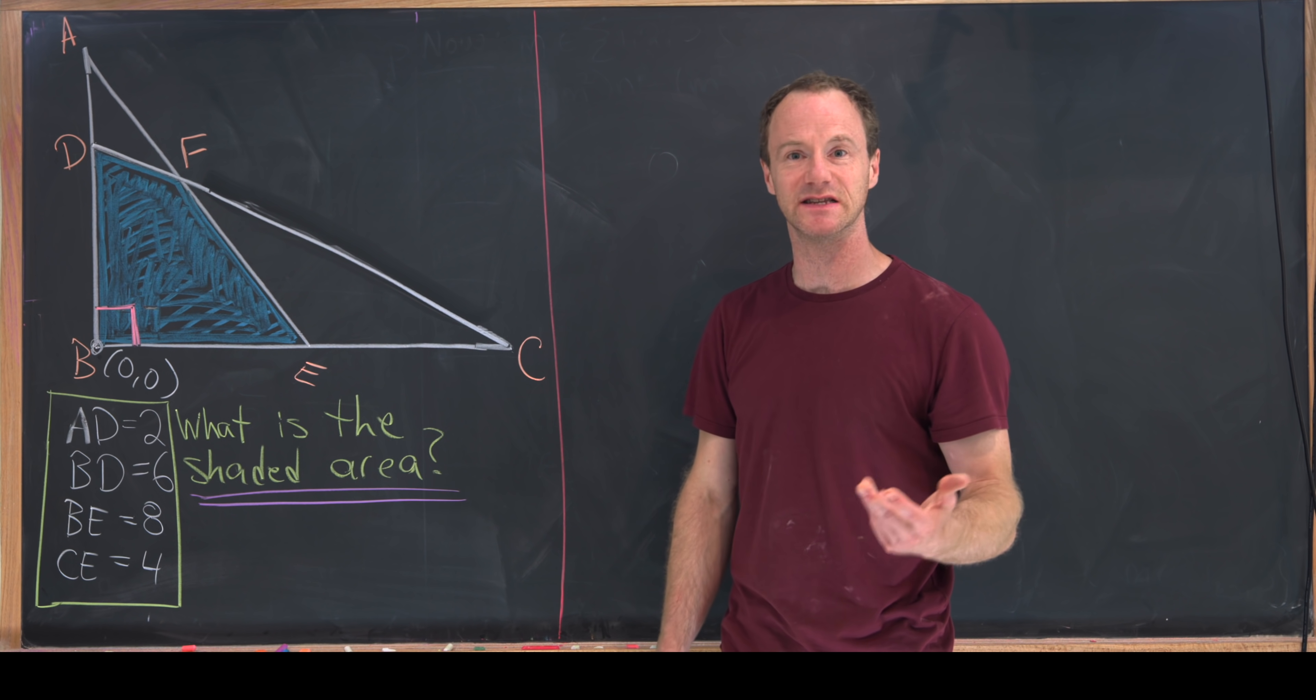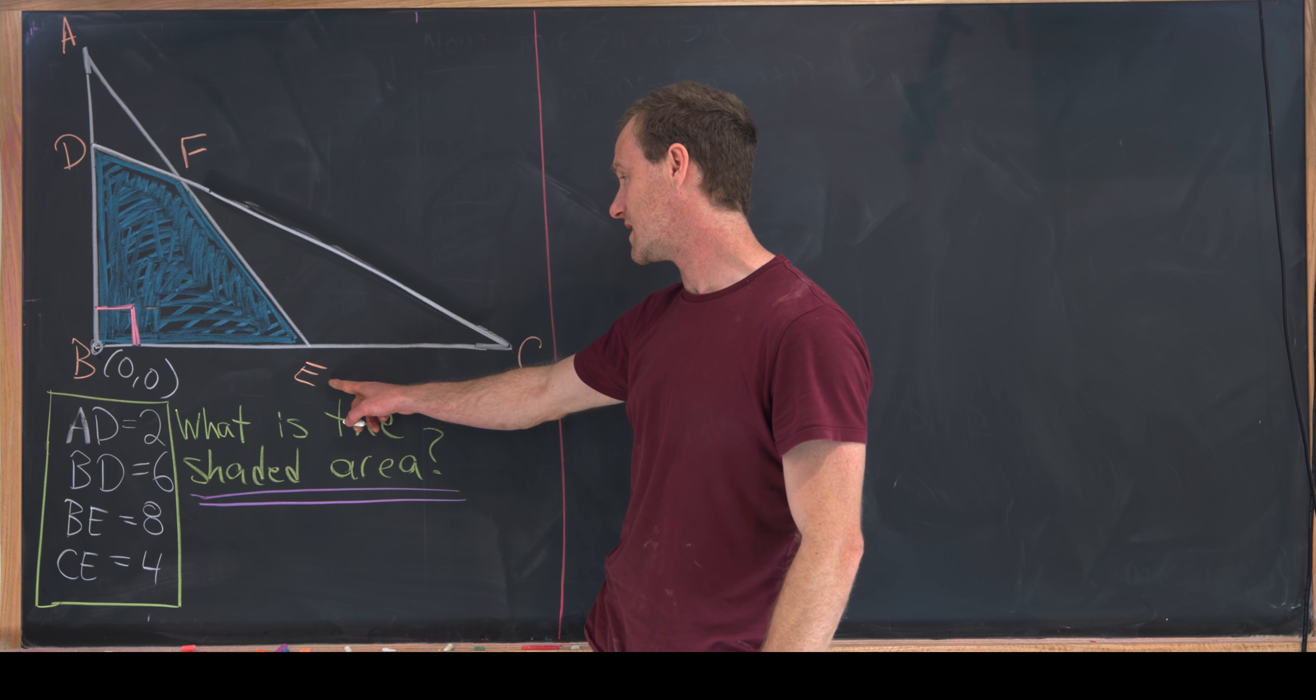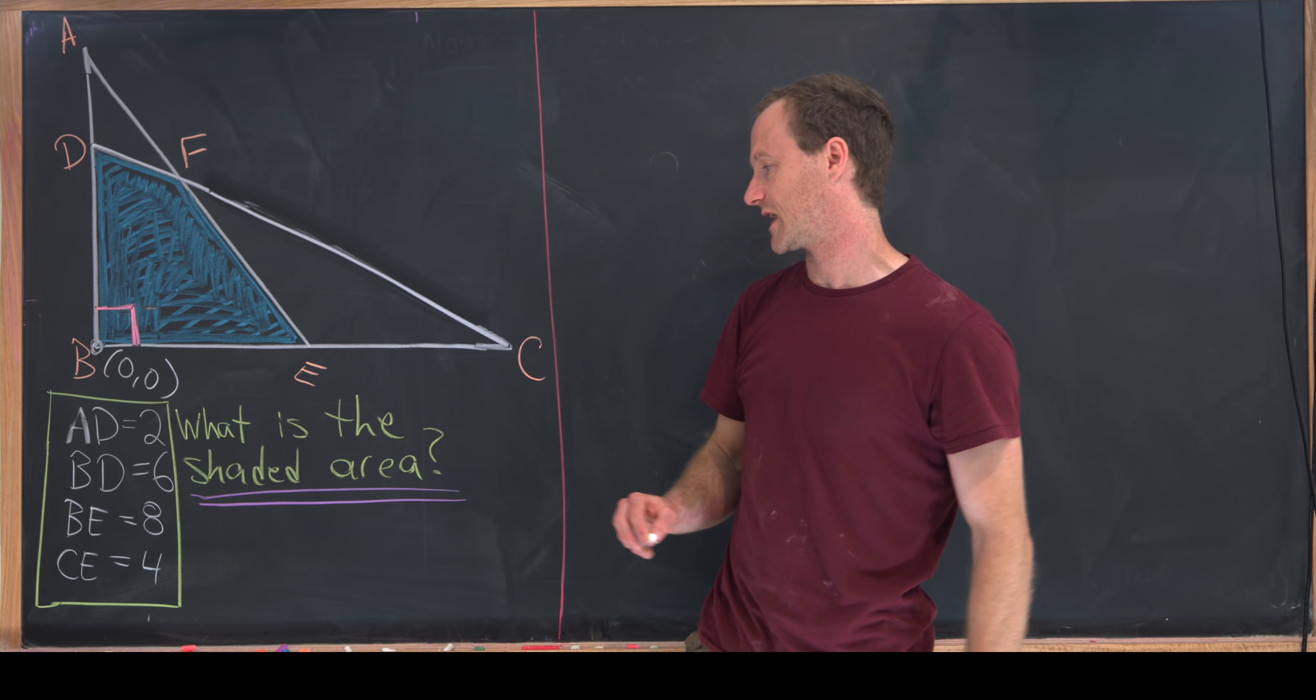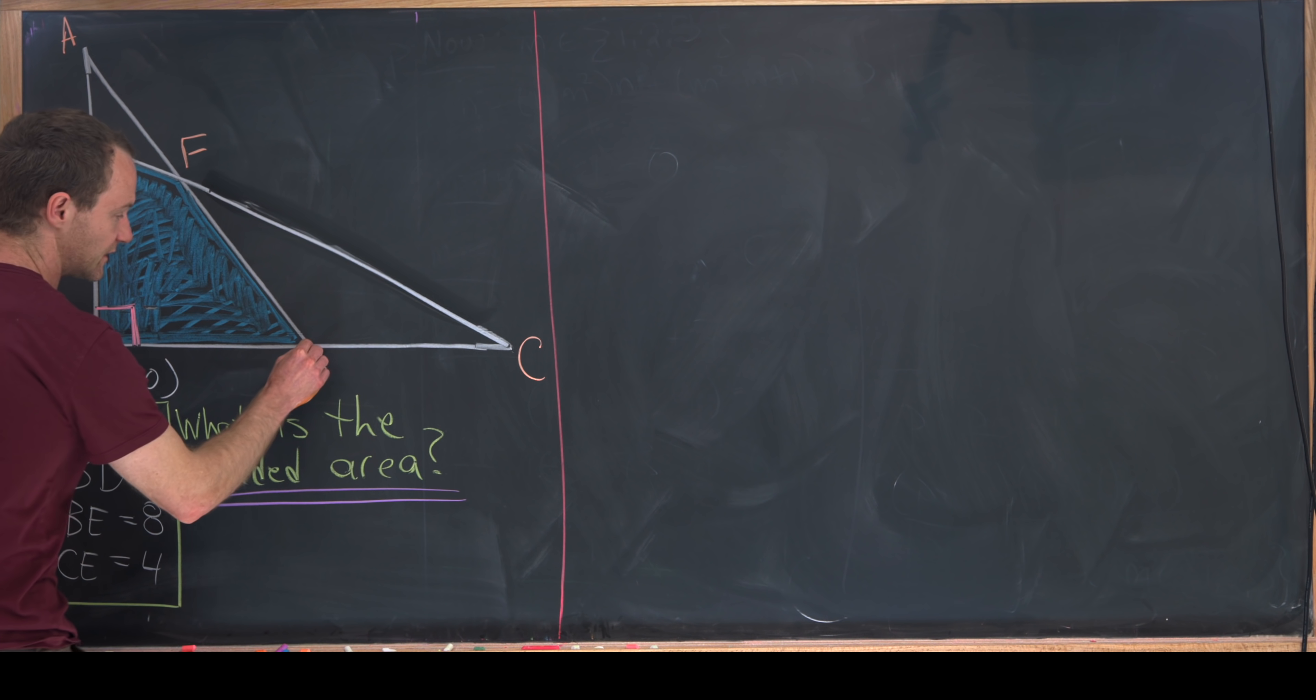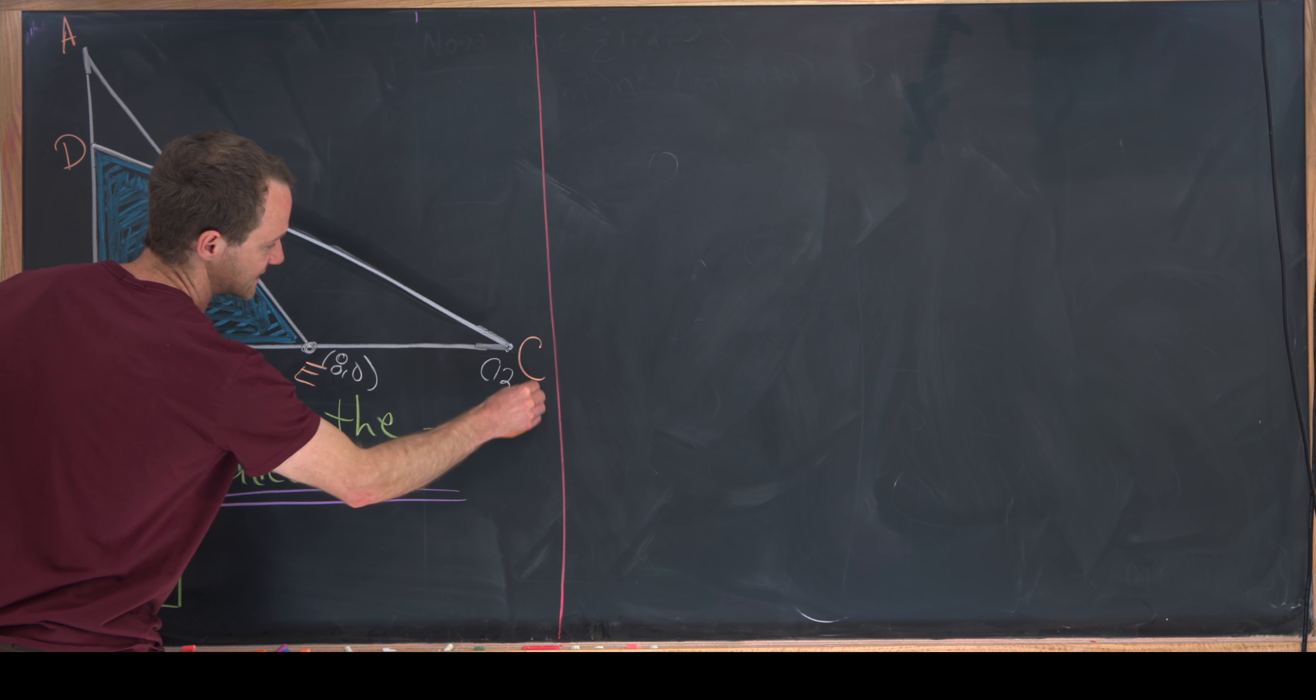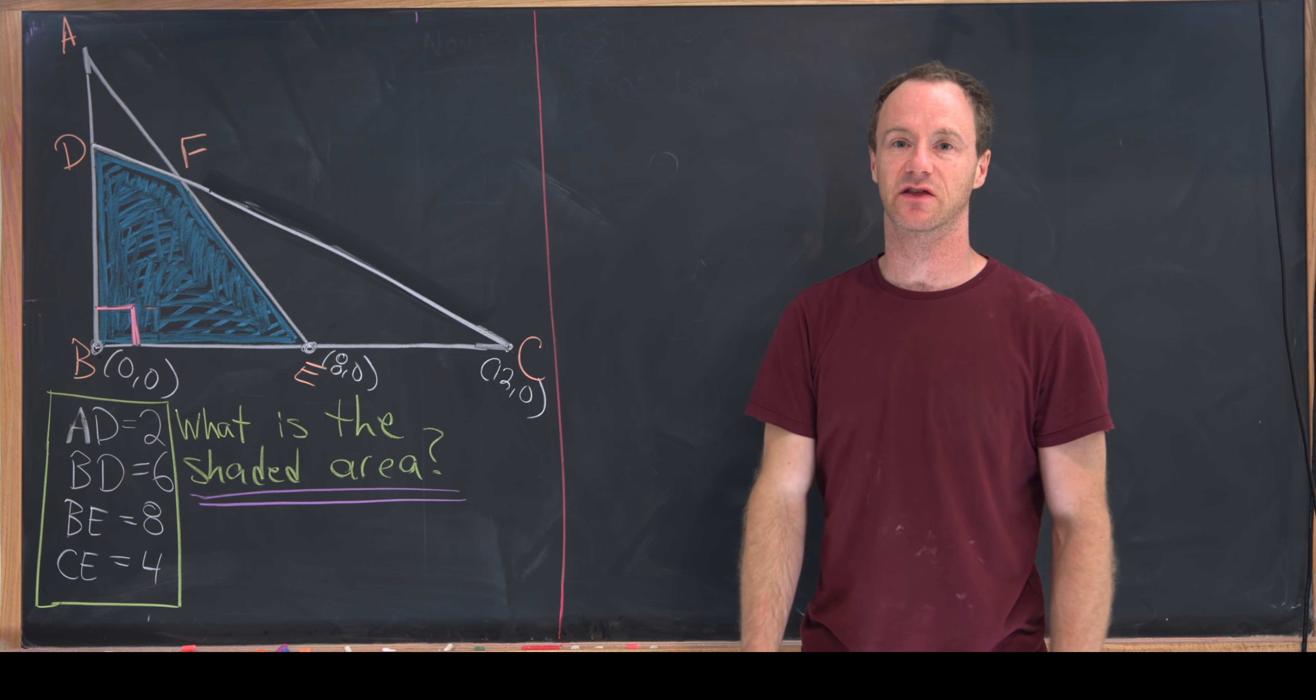Let's put the easy coordinates into this picture. Notice this point E is exactly 8 units from the origin and it's along the x-axis, so we know that this coordinate right here is (8, 0). Furthermore, we know this coordinate is (12, 0) because EC has length 4.